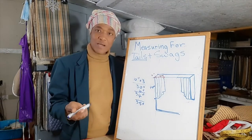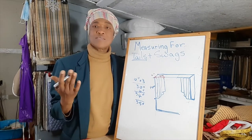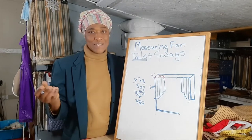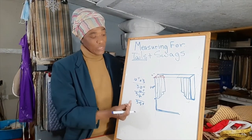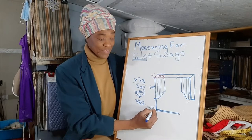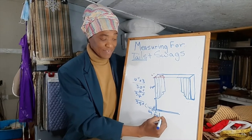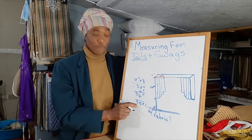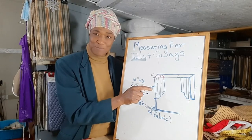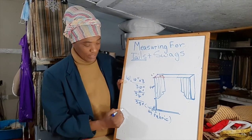So we'll need 35 inches of fabric for the width of one tail. Decor fabric comes in 54 to 60 inches wide, and sometimes you may even get double width which is 118 inches. We know then that one width of fabric is sufficient for the width of this tail.